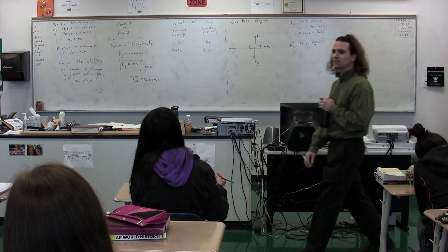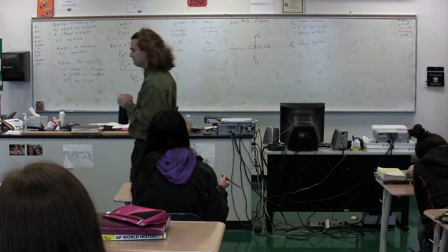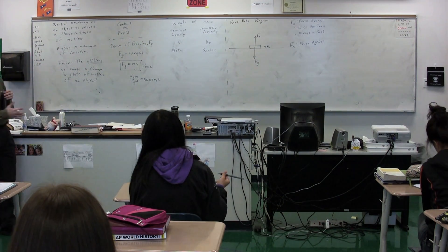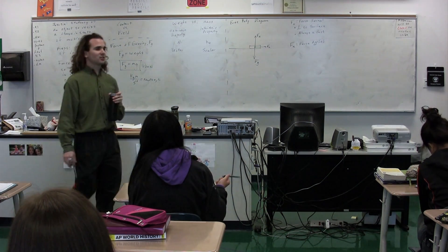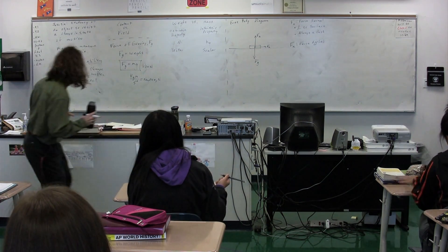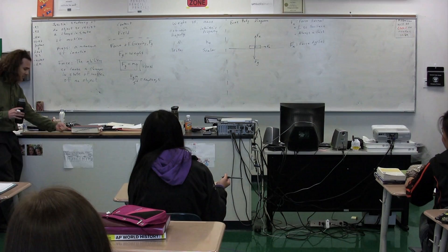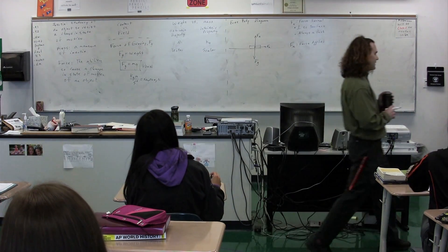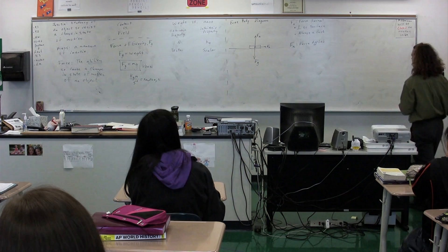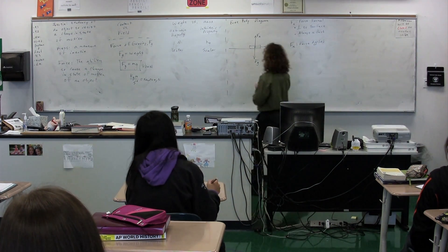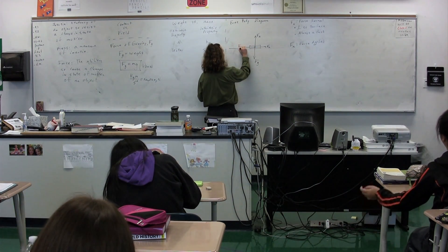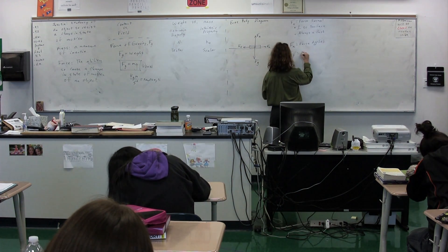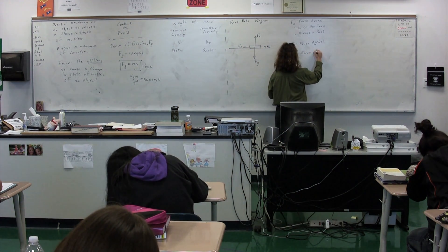If this were the complete free body diagram for the dictionary, what would be happening to the dictionary? It would move. It would be accelerating to the right. It would be moving to the right. Is the dictionary, Brittany, accelerating to the right when I push out? Here we go. No. Therefore, something must be preventing this from happening. There is a force acting to the left, which is called the force of friction. F sub little f, the force of friction.